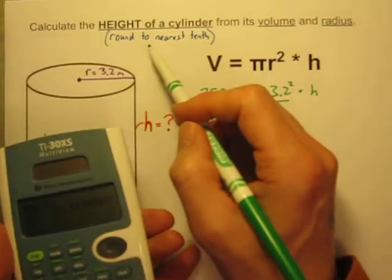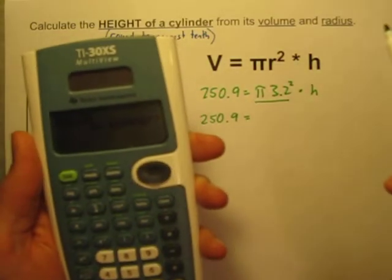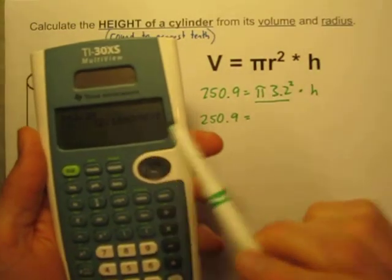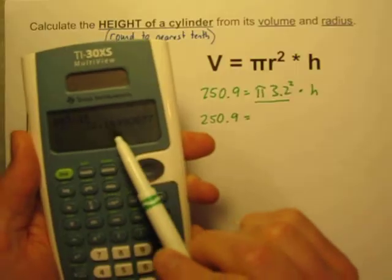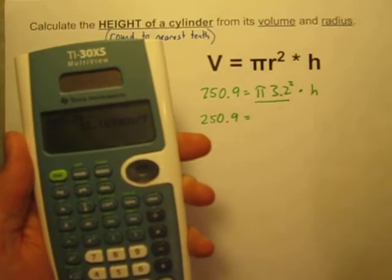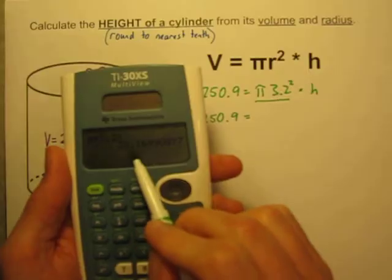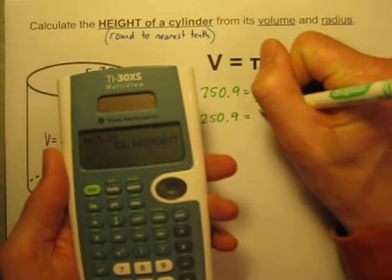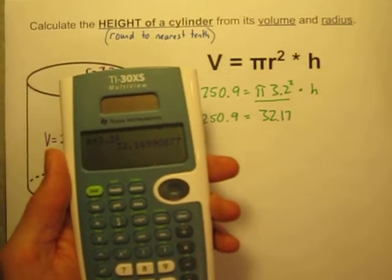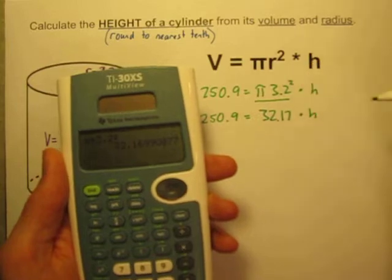The problem asks us to round our final answer to the nearest tenth. So what I think I'm going to do to avoid some rounding error is I'm going to keep a couple of those decimal places. So let's just say this is 32.17, so 32.17 times the height.